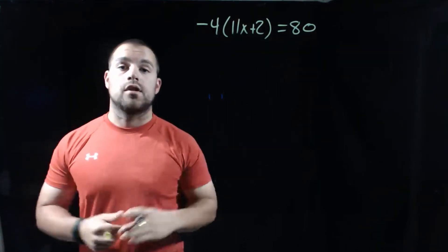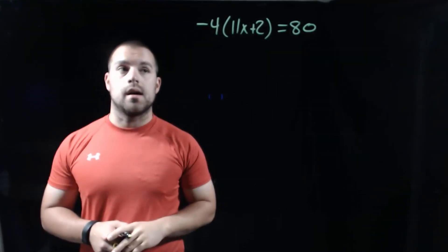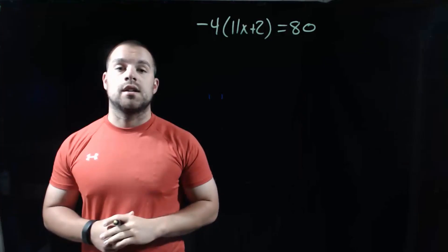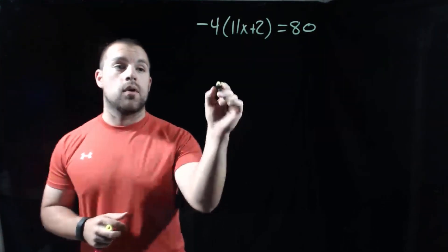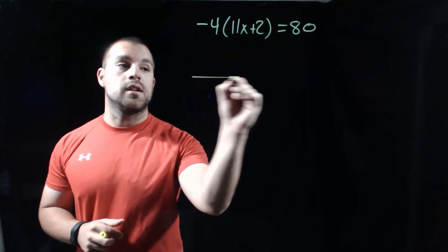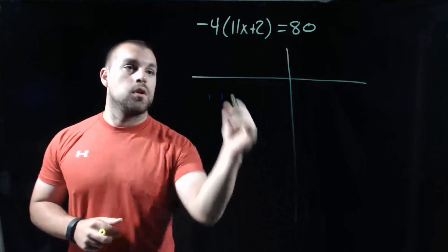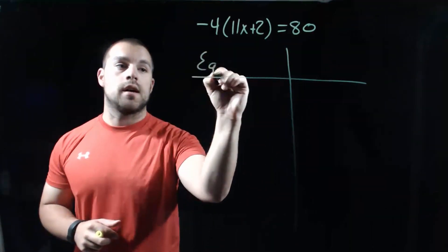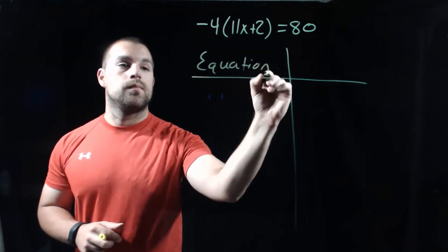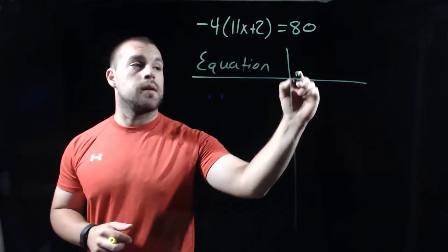The next equation we're going to solve is negative 4 times the quantity 11x plus 2 equals 80. And just like we did before, we're going to set up our T-chart with our equation on the left-hand side and our reasons on the right-hand side.